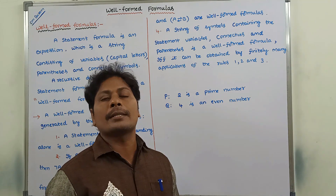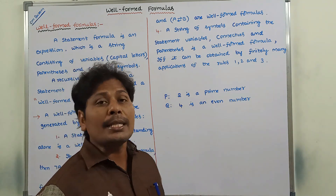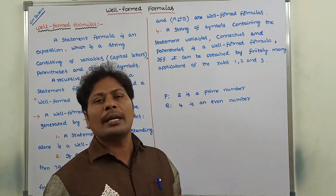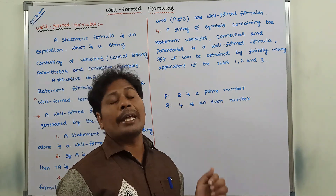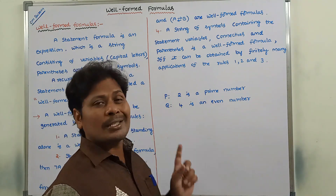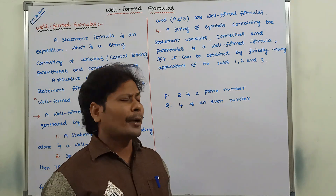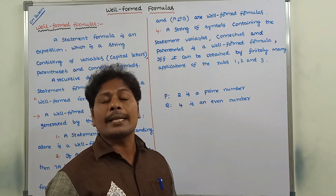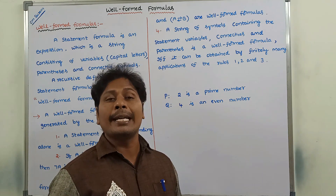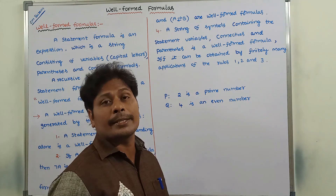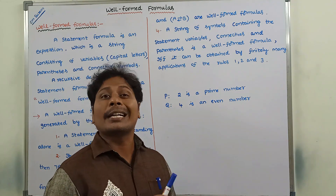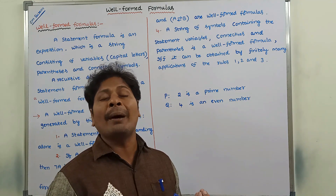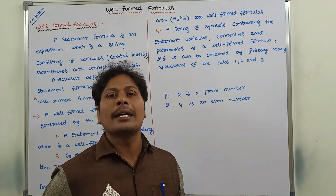Third, some examples on well-formed formulas. Let us consider two statements P and Q, where P is '2 is a prime number' and Q is '4 is an even number.' From these two statements, we have to write statement formulas. A statement formula is an expression which is a string consisting of statement variables, connectives, and parentheses. Whenever a formula contains these three things, it is called a statement formula.